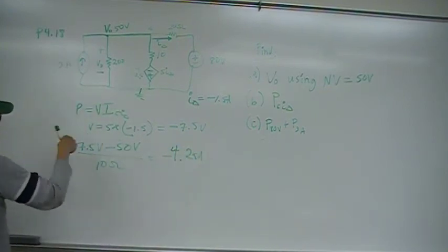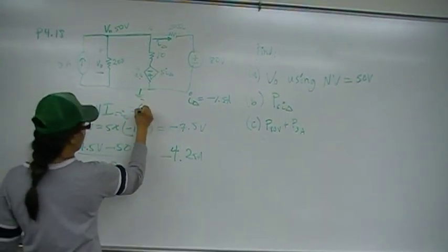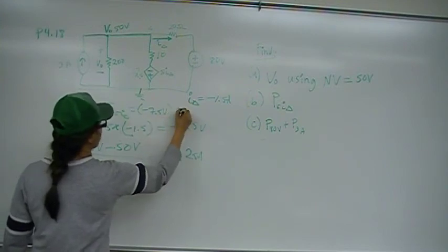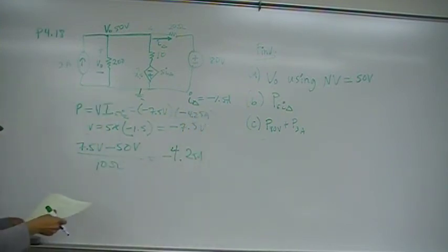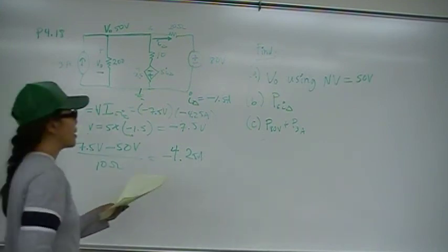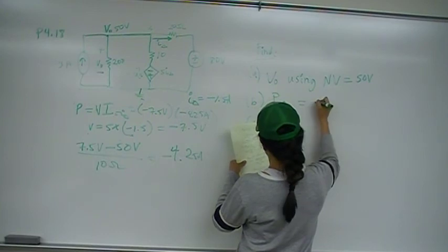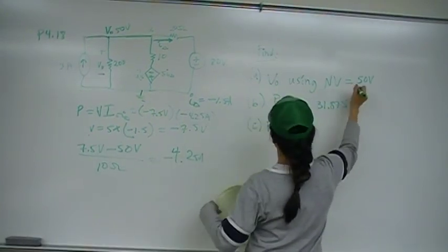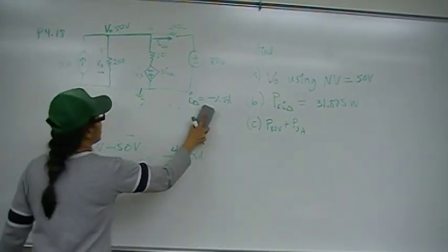So, now we have all the information that we need. So, this is going to be negative 7.5 volts times negative 4.25 amps. And when you do that, you should come up with the power that's being absorbed is going to be 31.875 watts. Okay, so now that's part B.